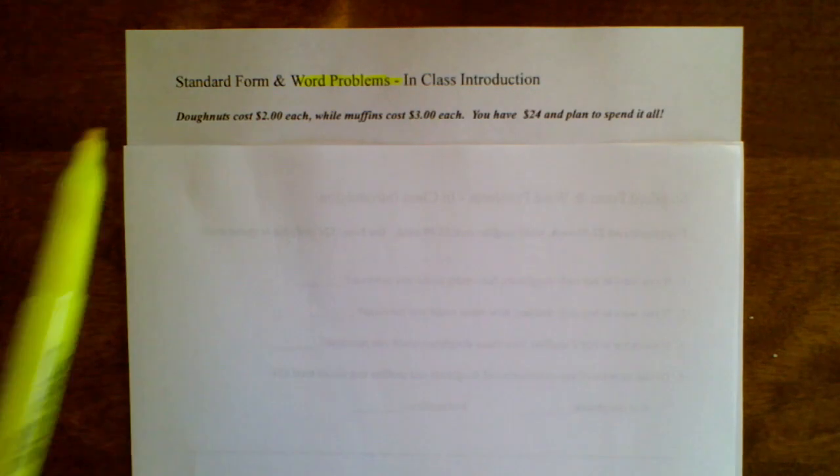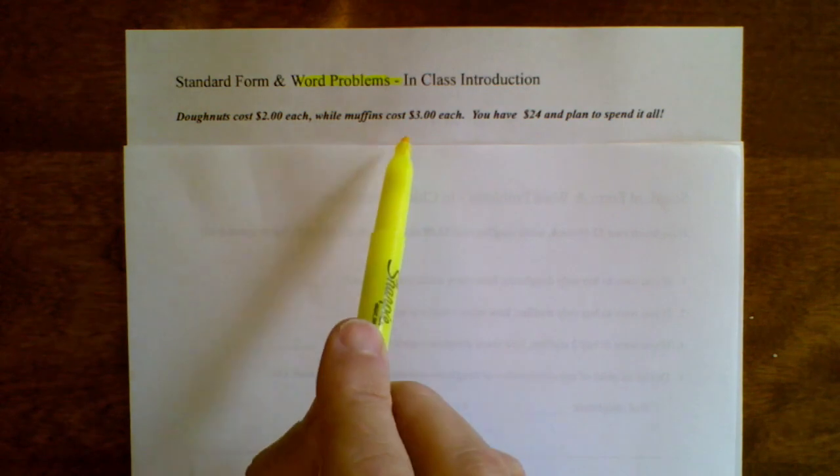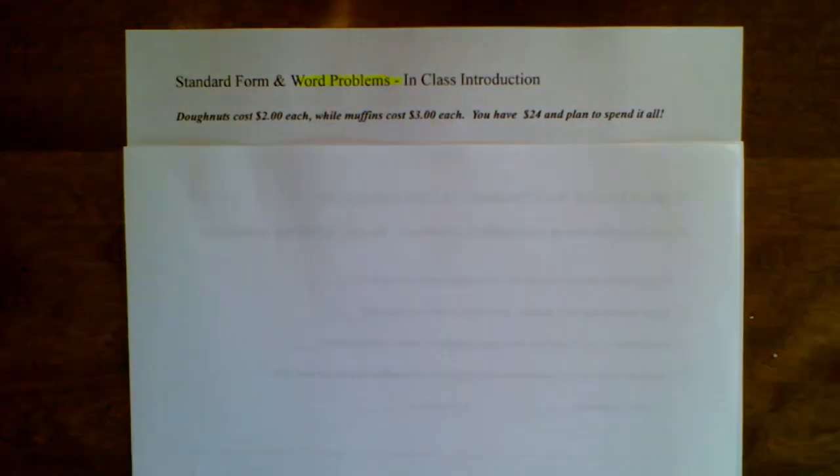So for our delicious example, you're going to walk into a bakery and find out that donuts cost $2, muffins cost $3, you have $24 in your pocket, and you're going to spend it all.